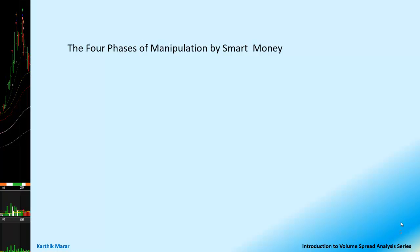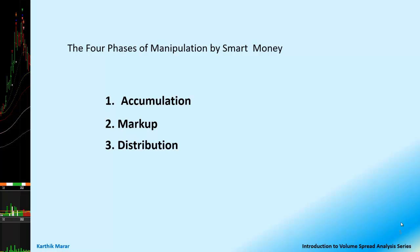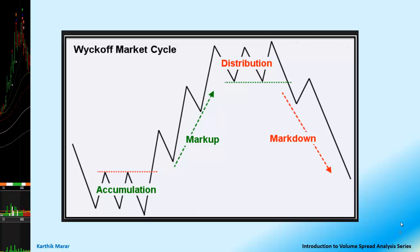There are four phases of manipulation by smart money or the strong hands: one, accumulation; two, markup; three, distribution; and finally, markdown. This is the cycle of campaign which the smart money executes, and this is generally called the Wyckoff market cycle.